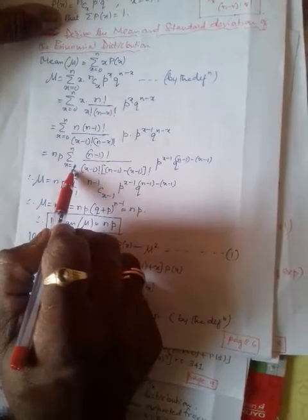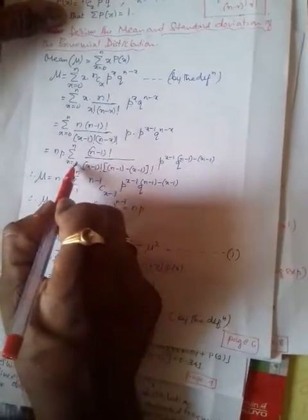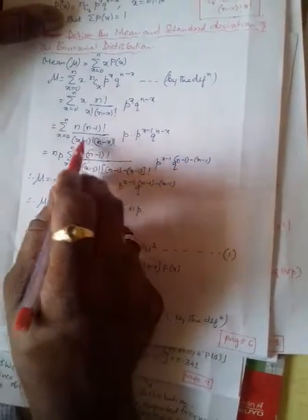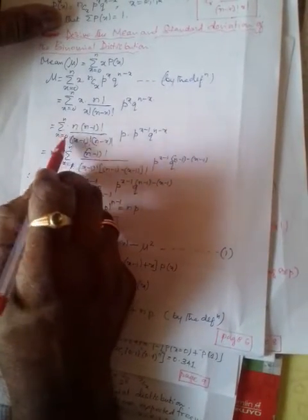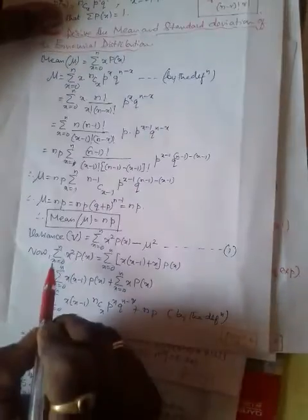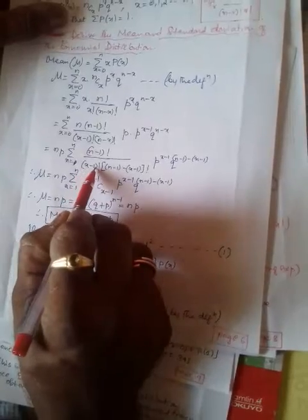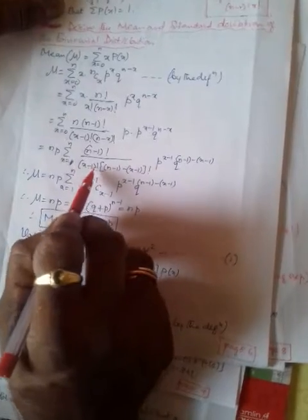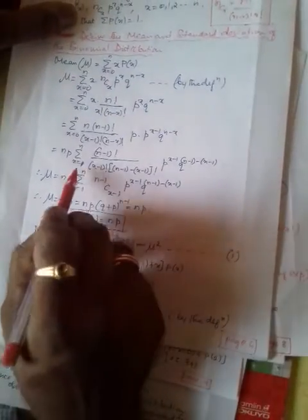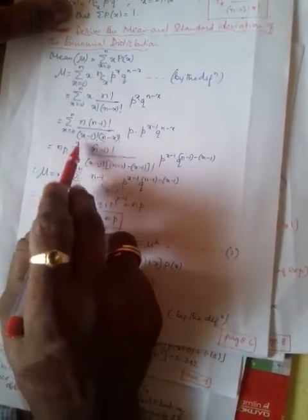Keeping N*P outside, the summation runs from X = 1 to N — not 0 to N — because X-1 factorial appears in the expression. If we put X = 0, we get (-1)!, which is meaningless. Therefore, we take X from 1 to N. The right-side term becomes (N-1)! / ((X-1)! * (N-X)!), and we can write N-X as (N-1) - (X-1).